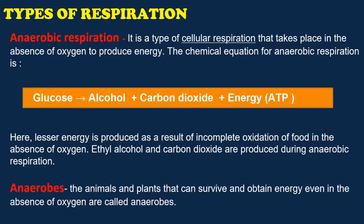Another type of respiration is anaerobic respiration. It is a type of cellular respiration that takes place in the absence of oxygen to produce energy. The chemical equation for anaerobic respiration is: glucose breaks down in the absence of oxygen into carbon dioxide and alcohol with production of a lesser amount of energy. Less energy is produced as a result of incomplete oxidation of food. Ethyl alcohol and carbon dioxide are produced during anaerobic respiration. The animals and plants that can survive and obtain energy even in the absence of oxygen are called anaerobes.